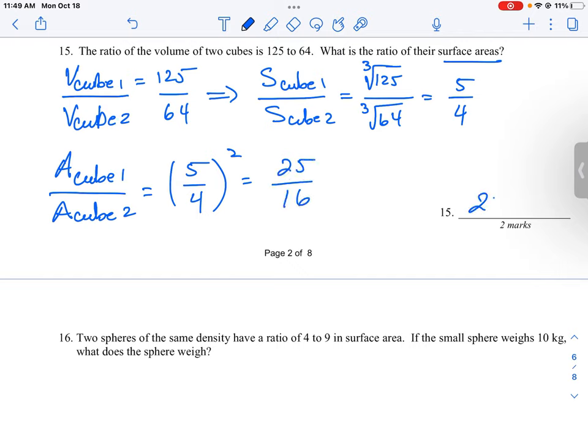So the ratio of the areas, large to small, this is going to be 25 to 16.